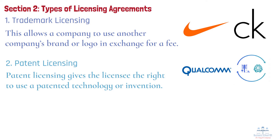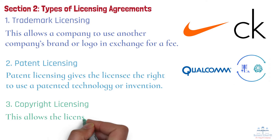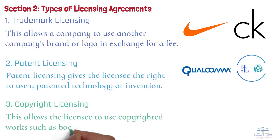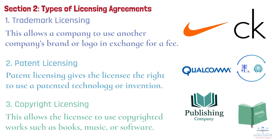Number 3: Copyright licensing. This allows the licensee to use copyrighted works such as books, music, or software. For example, a publishing company may license the rights to translate and sell a best-selling novel in a new language.